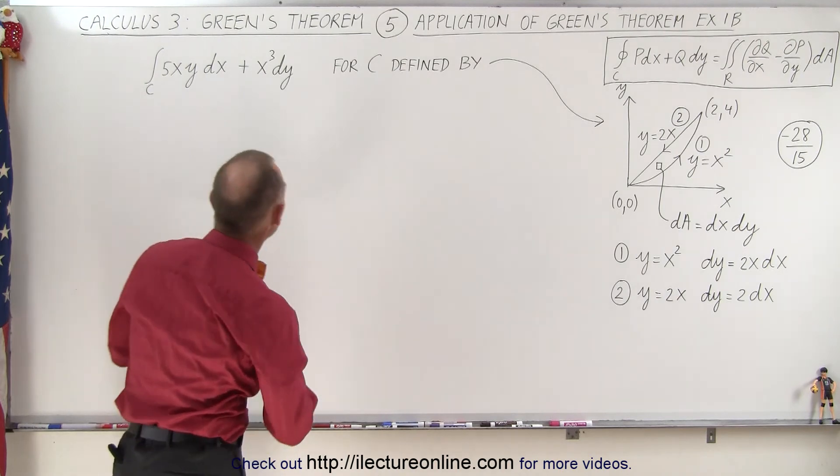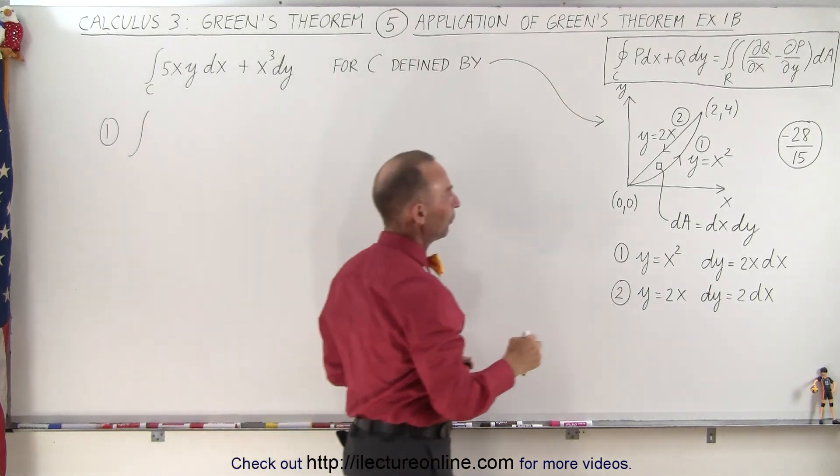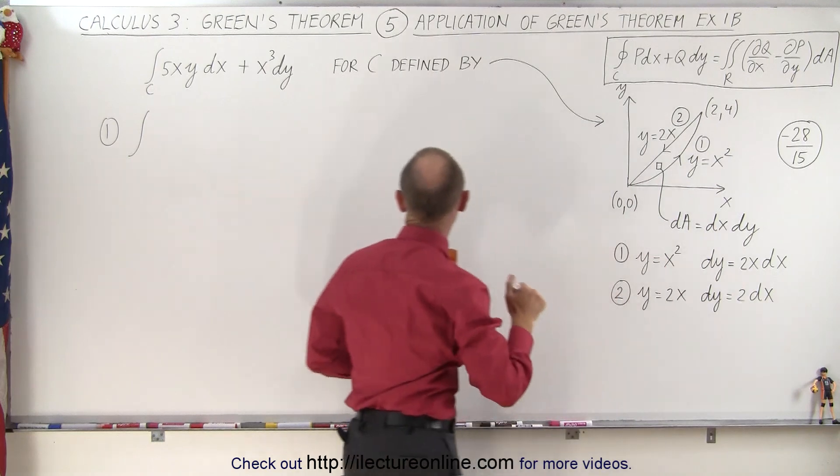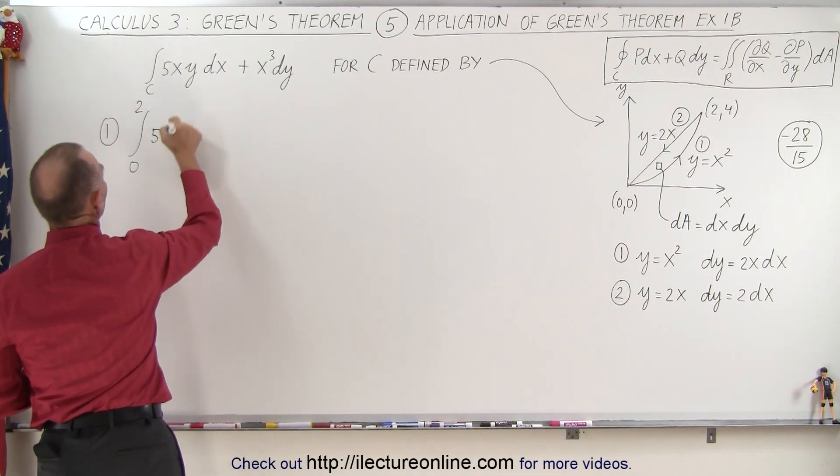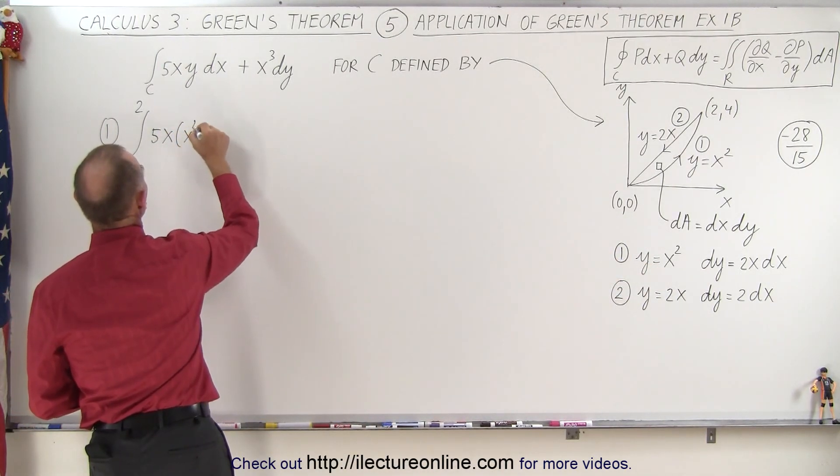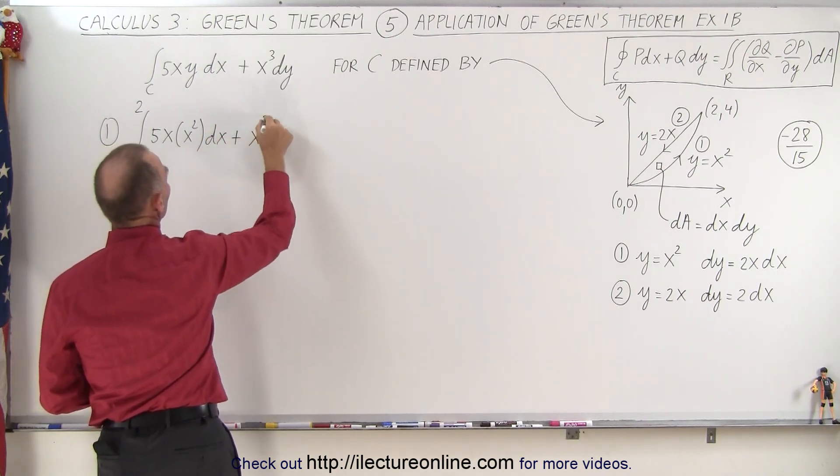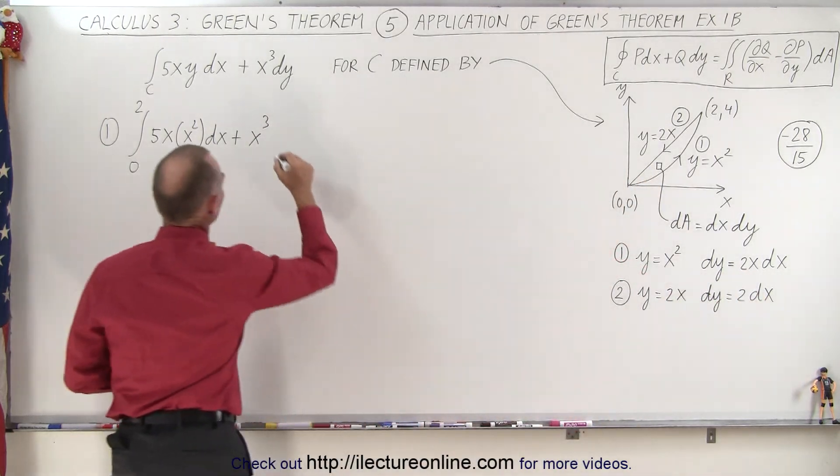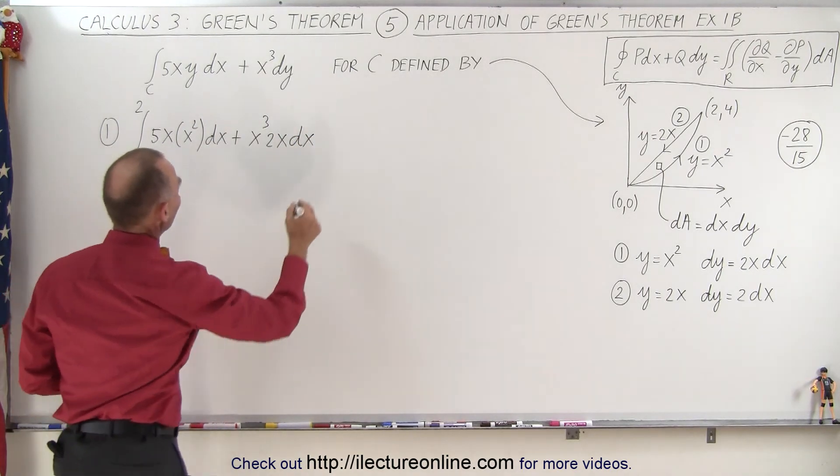So let's go ahead and do our first integral. We're going to integrate over the first curve. Since we're going to integrate over the x variable, x will go from 0 to 2. We have 5x, and instead of y on the first curve, y is equal to x squared. And we have dx plus x cubed, and instead of dy on the first curve, dy is 2x dx.